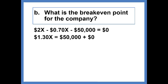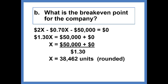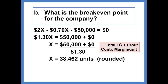When we do our math, we get $1.30x equals $50,000 plus zero, or x equals $50,000 plus zero divided by $1.30. This gives us a break-even point of 38,462 units. The shortcut would have been to just simply take the total fixed cost of $50,000 plus zero profit divided by the $1.30 contribution margin per unit.